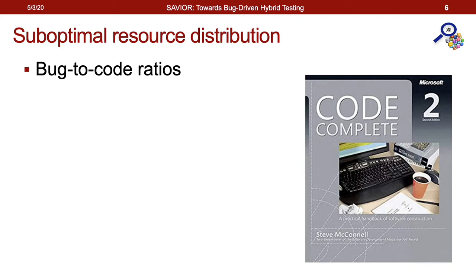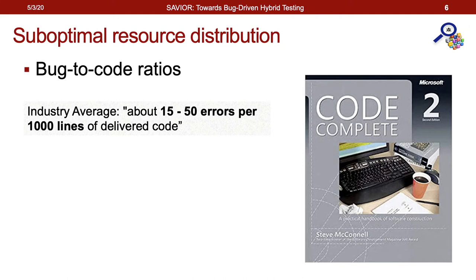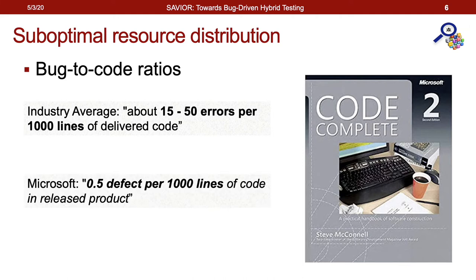The second problem with code coverage is that it results in suboptimal resource distribution. Quoting from the book Code Complete by Steve McConnell, in 1993 the industry average bug-to-code ratio is between 1.5 to 5%, and in places like Microsoft with better code quality control, the ratio is only 0.05%. But under code coverage guidance, the fuzzer treats each line of code equally with the same computation and storage resources. With a naive calculation, if we are testing a released Microsoft product, over 99.9% of our resources will be spent on places that won't produce any bug if we only rely on code coverage.